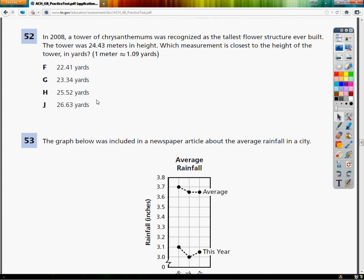This is the TCAP 8th grade practice test for math. This is question number 52. In 2008, a tower of chrysanthemums was recognized as the tallest flower structure ever built. The tower was 24.43 meters in height. So that's probably important, right? They give you a number in the middle of a word problem. You should probably be circling it or something. Which measurement is the closest to the height of the tower in yards?